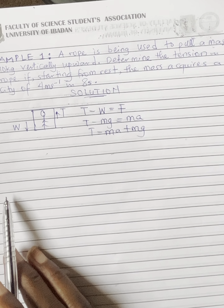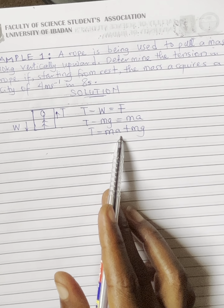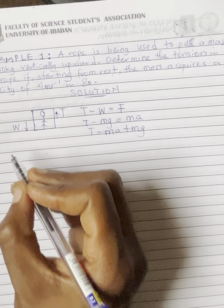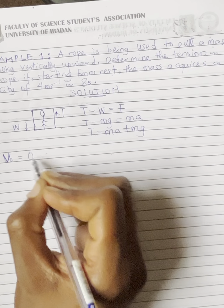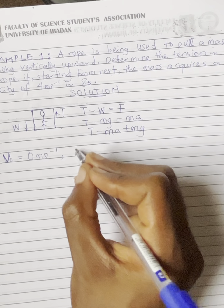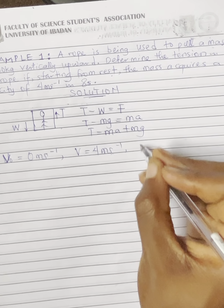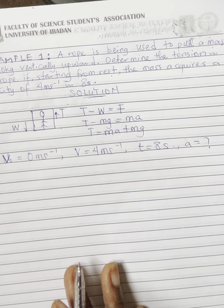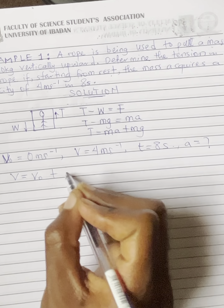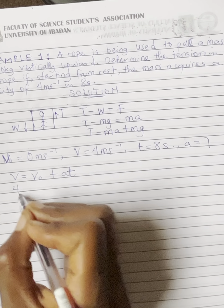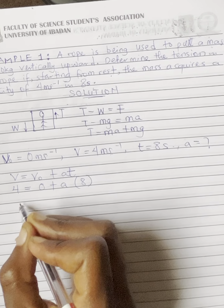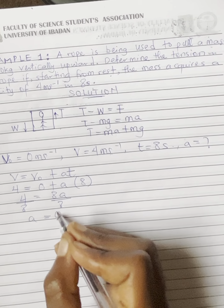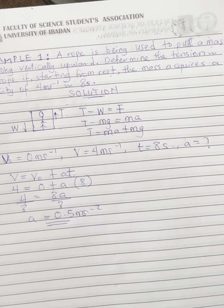We need to find the tension, but we don't have the acceleration, so first we calculate it from the given parameters. Initial velocity v₀ equals 0 m/s, final velocity v equals 4 m/s, and time t equals 8 seconds. Using v equals v₀ plus at: 4 equals 0 plus 8a, so a equals 0.5 m/s².